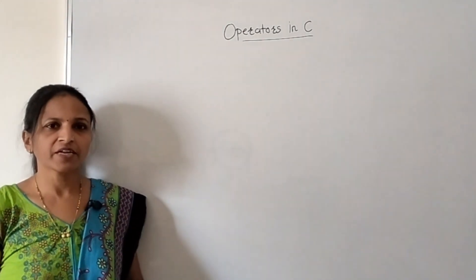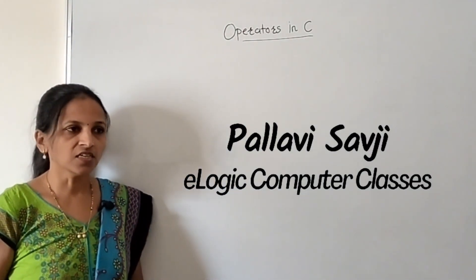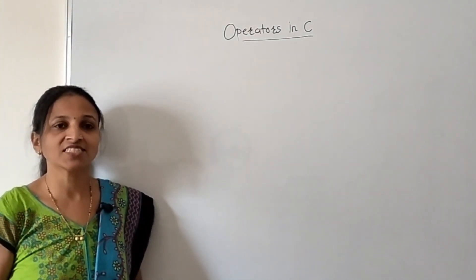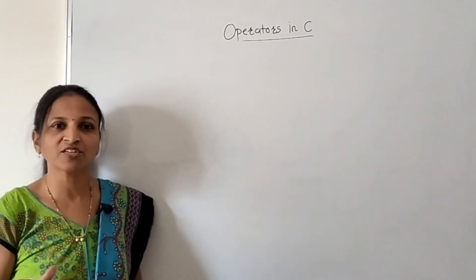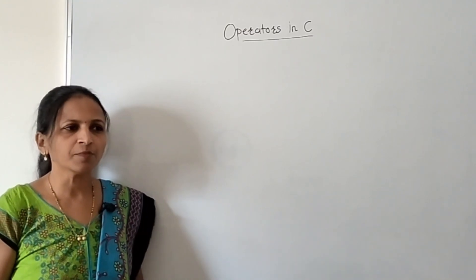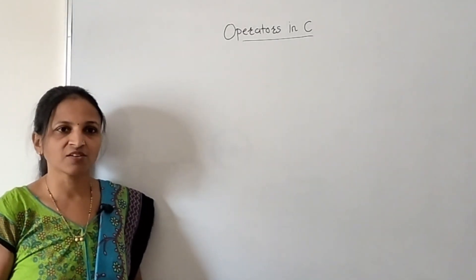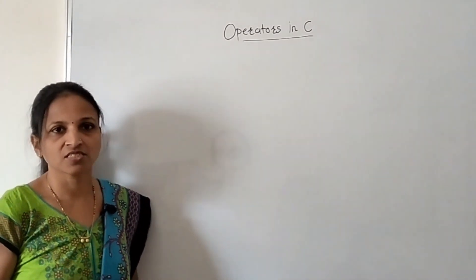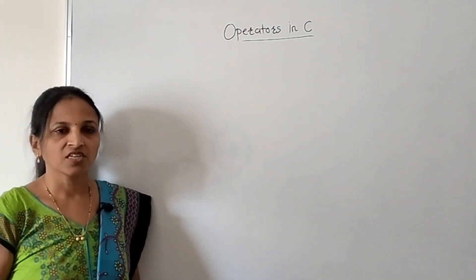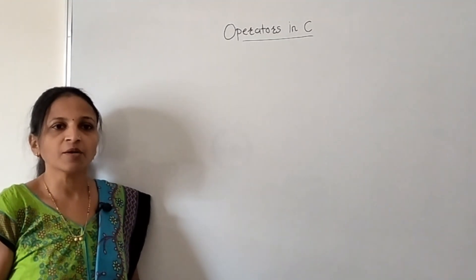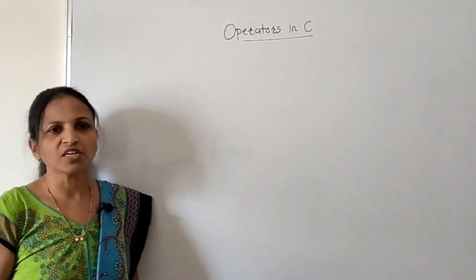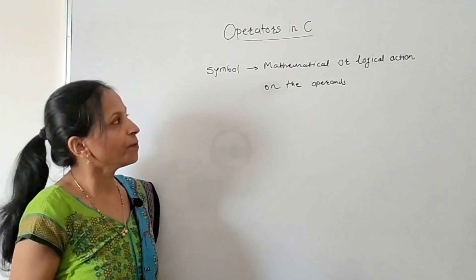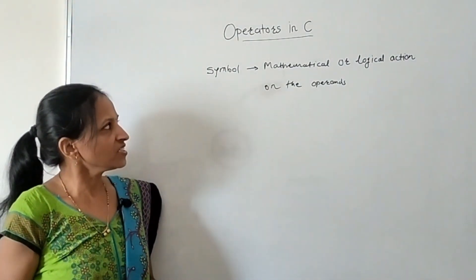In this session I am going to explain operators in C language. We have already seen one of the most important features of C language — C has a rich set of built-in functionality and built-in operators. There are multiple operators provided by C language itself and we can use all those operators directly in our program instructions. Now, what is exactly an operator? An operator is a symbol that can be used to do any particular mathematical or logical action on the operands.